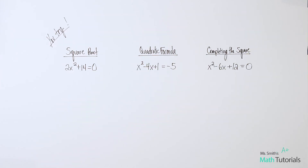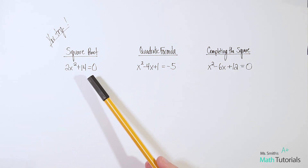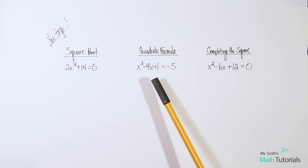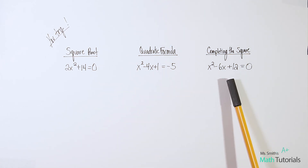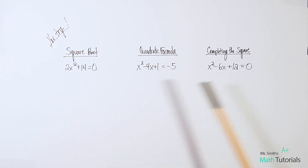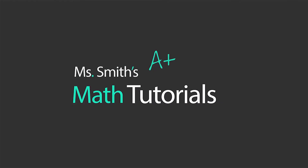Here are three U-try problems for you. I want you to try to solve the first one using the square root method, the second one using the quadratic formula, and the third one using completing the square. Each one is going to end up with an imaginary number — a non-real solution. I will post the answers in the video description below. This has been Ms. Smith's Math Tutorials.